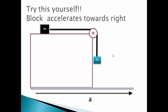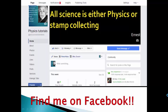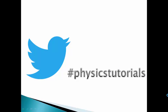Try this yourself. This block has masses M and M connected with a pulley, and this entire block is accelerating towards the right. Mark the AFR and label the forces acting on the two smaller blocks. Leave your answers on my Facebook page or tag me on Twitter using hashtag PhysicsTutorials.